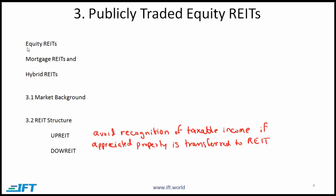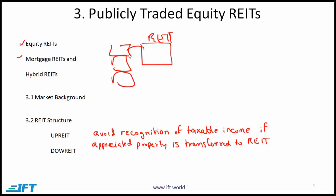Section 3 starts with a quick overview of equity REITs and mortgage REITs. In an equity REIT, the REIT has an ownership stake or equity stake in different kinds of properties. In a mortgage REIT, the REIT takes its assets and invests them in mortgages. A hybrid REIT is a combination of equity and mortgage, but these are not very common.